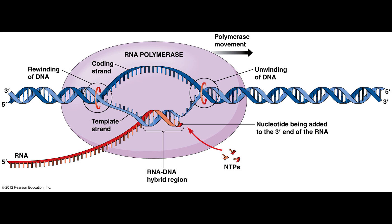As the RNA polymerase moves downstream of the template strand, it unwinds the DNA double helix ahead of itself, and behind it the newly formed RNA strand dissociates from the template strand and the DNA strands rejoin. The non-template strand is also called the coding strand, as its sequence corresponds directly to that of the RNA transcript, because both are complementary to the template strand.